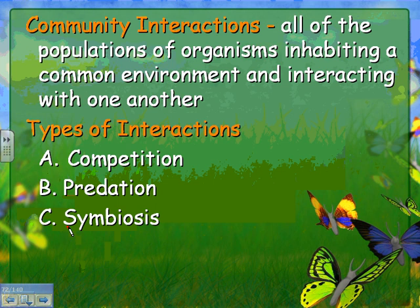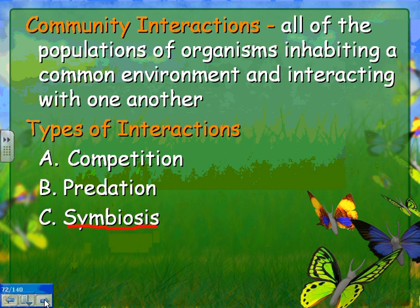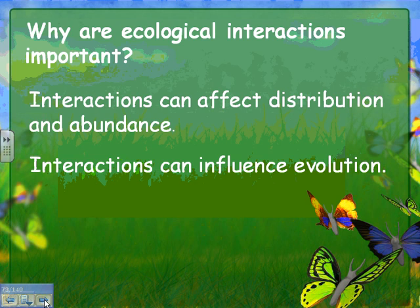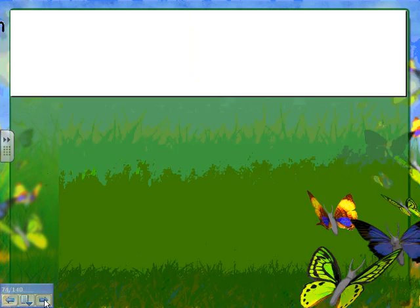The third interaction is symbiosis, a close interaction where one organism lives on or inside another — like a tapeworm living inside a host. There are three types of symbiosis. Ecological interactions are important because they can affect the distribution and abundance of organisms and can influence evolution.